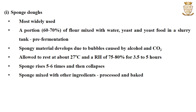The sponge dough system is the most widely used. A portion, generally 60 to 70% of the flour, is mixed with water, yeast and yeast food in a slurry tank during the pre-fermentation step. A spongy material develops due to bubbles caused by alcohol and carbon dioxide, and hence this system is termed the sponge dough system. The sponge is allowed to rest at about 27 degrees Celsius at a relative humidity of 75 to 80% for about 3 to 5 hours. During this period the sponge rises 5 to 6 times and then collapses spontaneously. During the next stage, the sponge is mixed with all the other ingredients, processed and then baked.